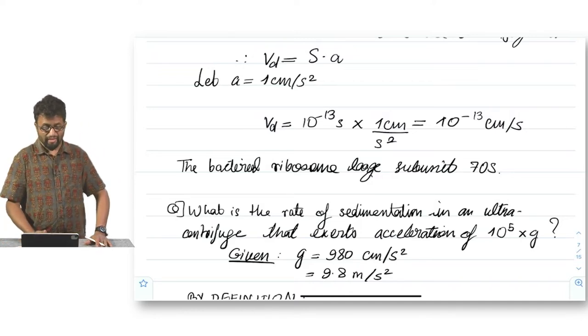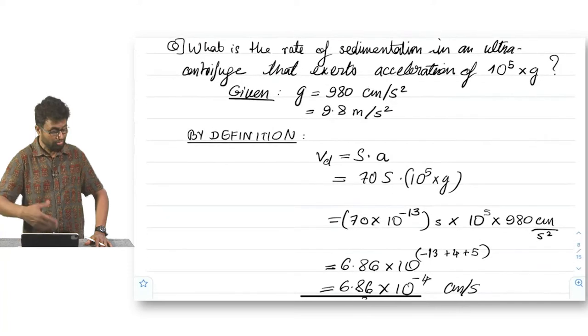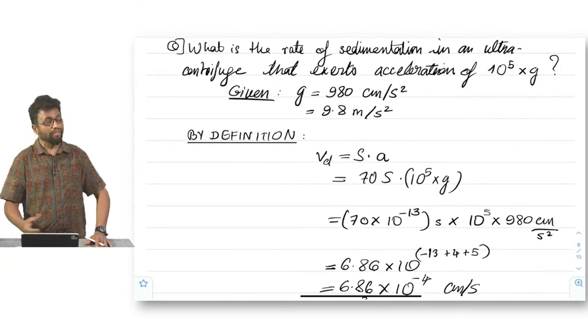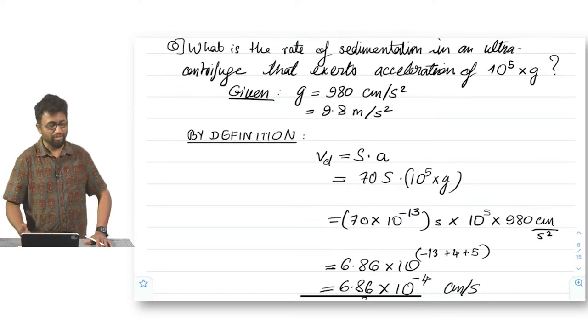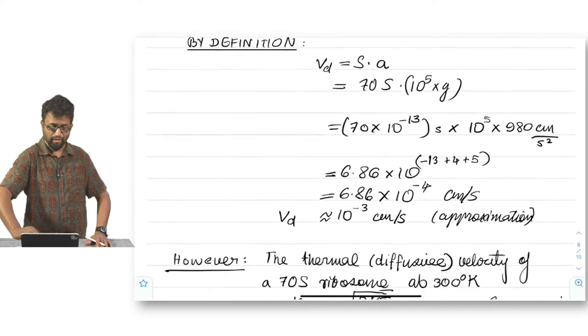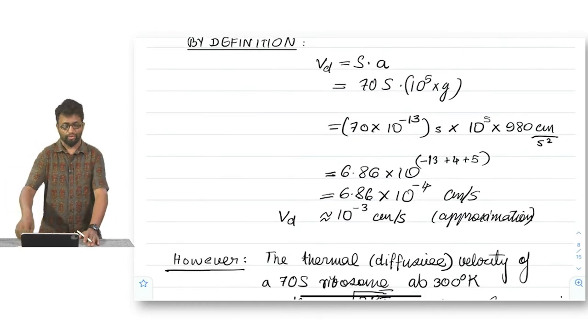But the bacterial ribosome subunit is 70S. So, what will the rate of sedimentation be? This is what we asked ourselves. So, we need a few numbers. We need gravitational acceleration. All of us know it's 9.8 meters per second square or 980 centimeters per second square. I am going to use the CGS units for the moment. By definition, V downward is equal to S into A, as we said.